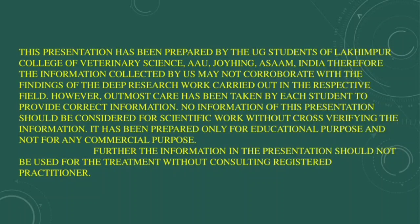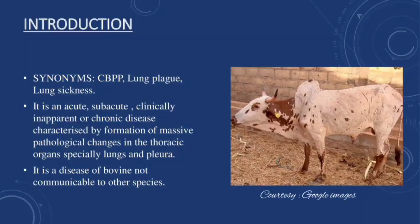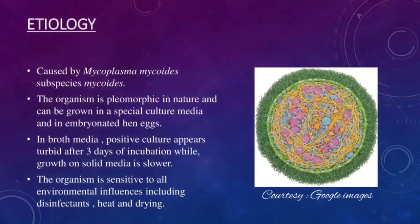With that being said, let's move forward. Contagious Bovine Pleural Pneumonia is also termed as CBPP, Lung Plague, or Lung Sickness. It is an acute, sub-acute, clinically inapparent, or chronic disease, characterized by formation of massive pathological changes in the thoracic organs, especially the lungs and pleura. It is a disease of bovines, not communicable to other species. Let us now discuss about the etiology of this disease.